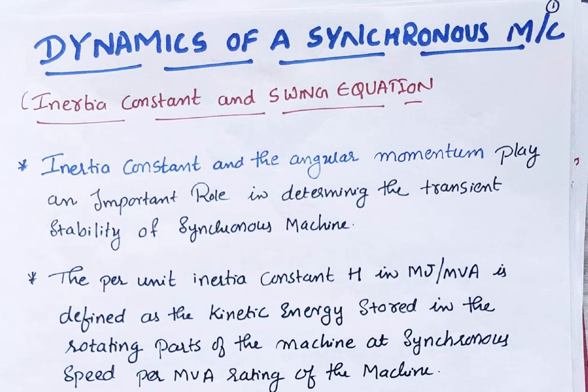We also covered the different types of Power System Stability, such as Rotor Angle Stability, Voltage Stability, and Frequency Stability. Under Rotor Angle Stability and Frequency Stability, we saw different classifications. Now we will study the Dynamics of a Synchronous Machine.